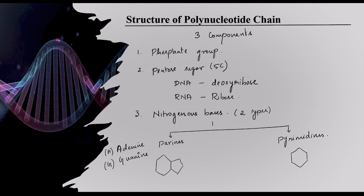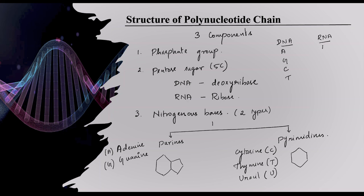Coming to pyrimidines, they consist of three components: cytosine (C), thymine (T), and uracil (U). DNA contains adenine, guanine, cytosine, and thymine. But RNA contains adenine, guanine, cytosine, and instead of thymine, RNA contains uracil. This is the main difference between DNA and RNA.